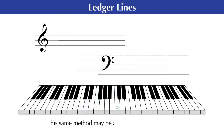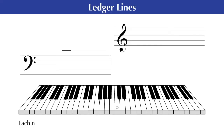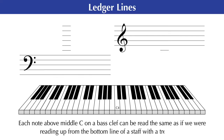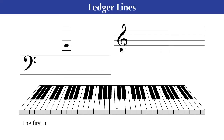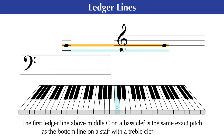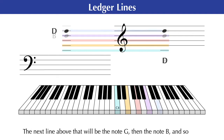This same method may be applied to the ledger lines above the staff with a bass clef as well. Each note above middle C on a bass clef can be read the same as if we were reading up from the bottom line of a staff with a treble clef. For example, the first ledger line above middle C on a bass clef is the same exact pitch as the bottom line on a staff with a treble clef, the note E. The next line above that will be the note G, then the note B, and so forth.